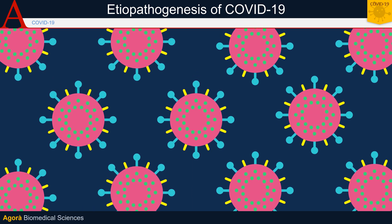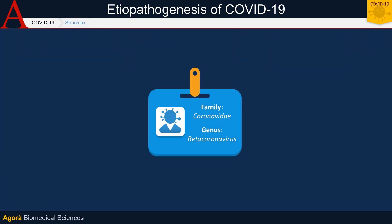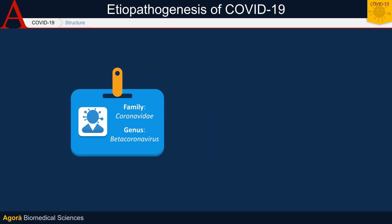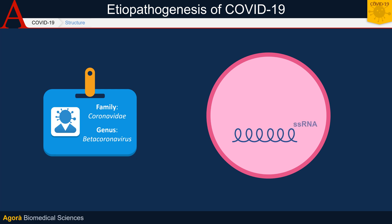SARS-CoV-2 is a beta-coronavirus belonging to the Coronaviridae family. It is an RNA virus and, more specifically, a single-stranded RNA or SS-RNA virus with positive polarity. That is to say that its genome can act directly as a messenger RNA without previous synthesis by an RNA-dependent RNA polymerase.